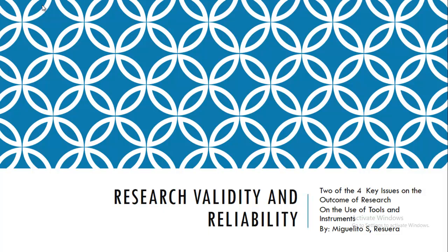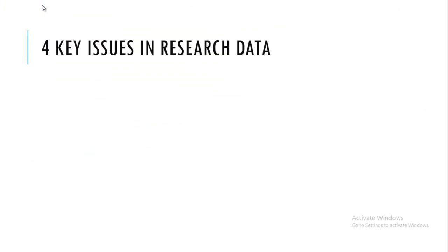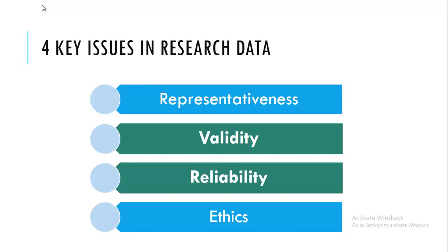Research Validity and Reliability: Two of the Four Key Issues on the Outcome of Research on the Use of Tools and Instruments, by Miguelito S. Resuera. The four key issues in research data are: Representativeness, Validity, Reliability, and Ethics. Validity and Reliability are the main course of this report.